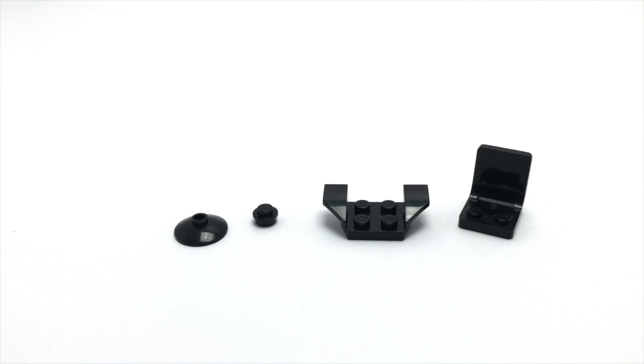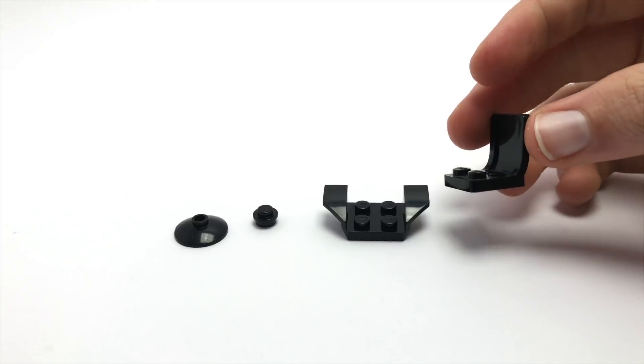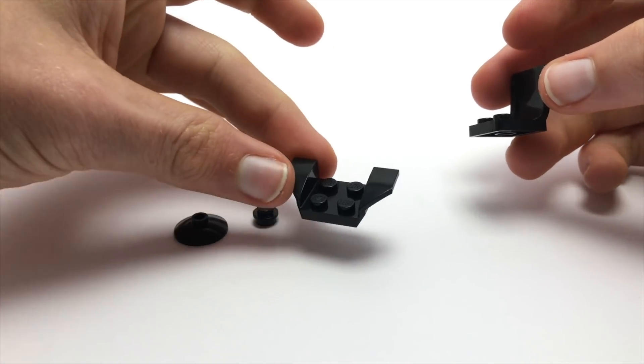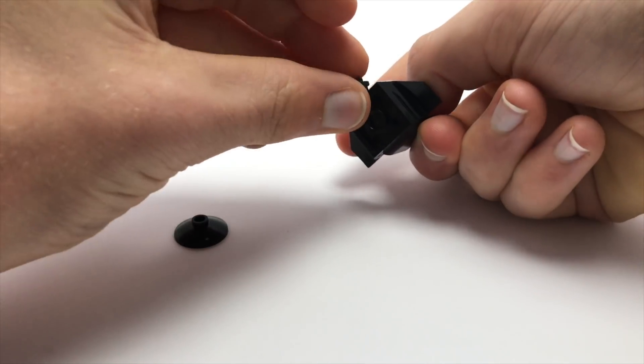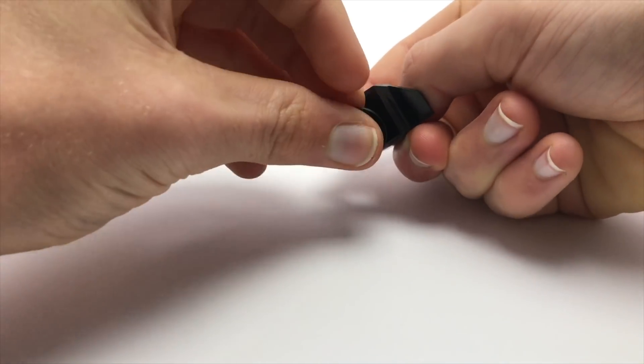For this next one, I'm going to show you how to improve the standard LEGO chair. Take one of these wheel guard pieces and fit that on there, then take a stud and a dish, and you've got yourself a really awesome looking chair.